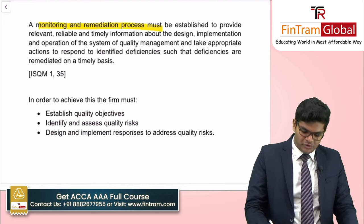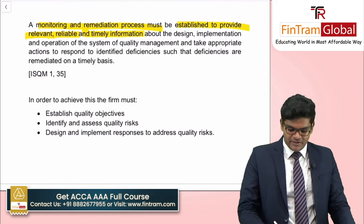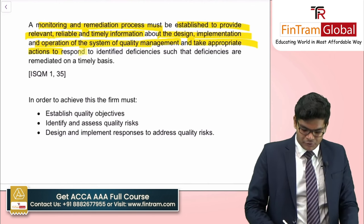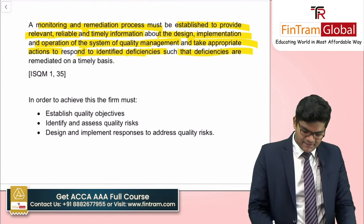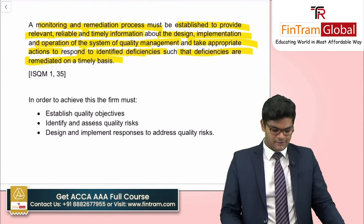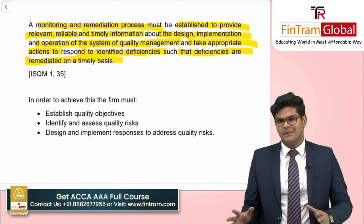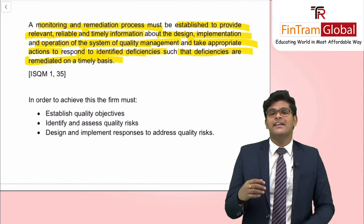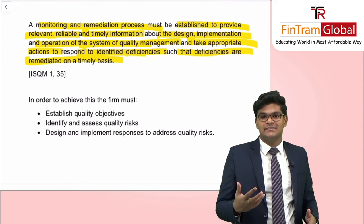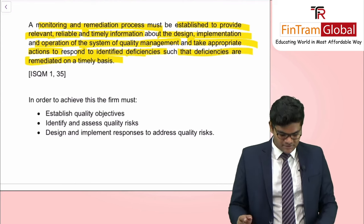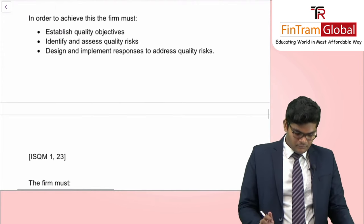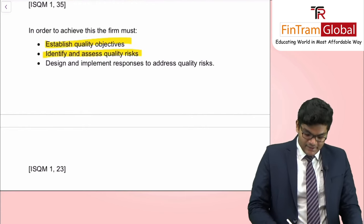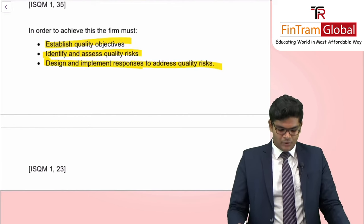In monitoring and remediation, we look at the monitoring aspect, evaluate deficiencies, remediate by taking corrective action, and conduct an annual review. The monitoring and remediation process must be established to provide relevant, reliable, and timely information about the design, implementation, and operation of the system of quality management, and take appropriate action to respond to identified deficiencies so that deficiencies are remediated on a timely basis. To achieve this, the firm must establish quality objectives, identify and assess quality risks, and design and implement responses to address those quality risks.